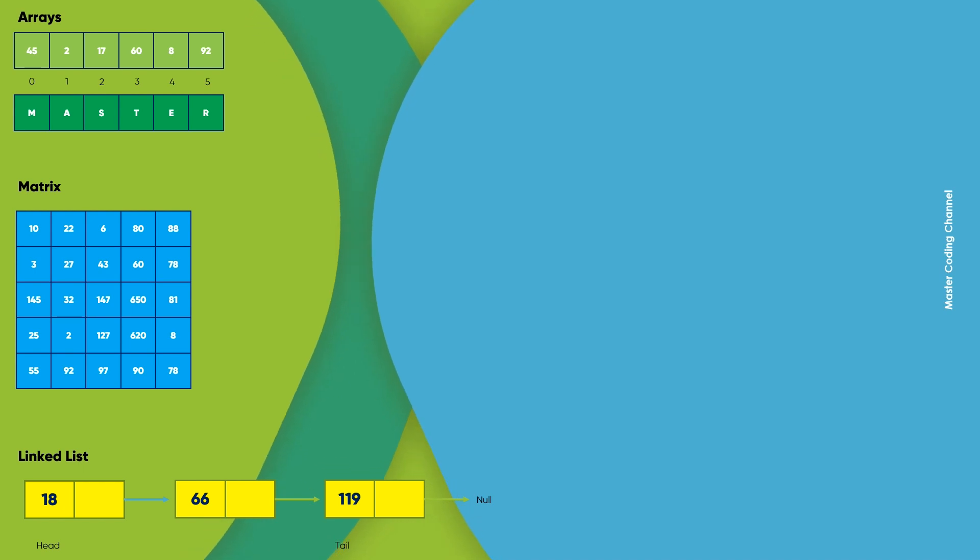Consider the following linked list where the elements are known as nodes. Each node contains a key and a pointer to its successor node known as next. The attribute named head points to the first element and the last element is known as tail.